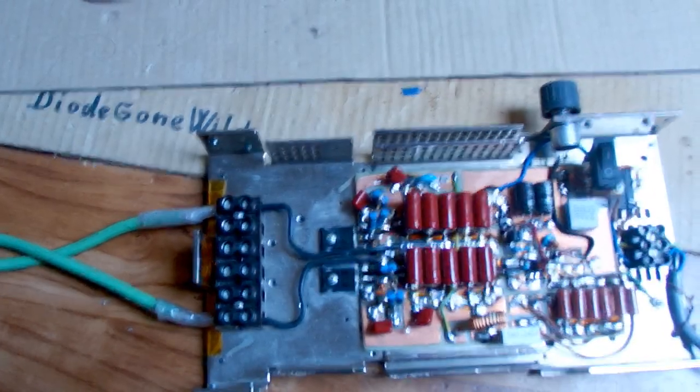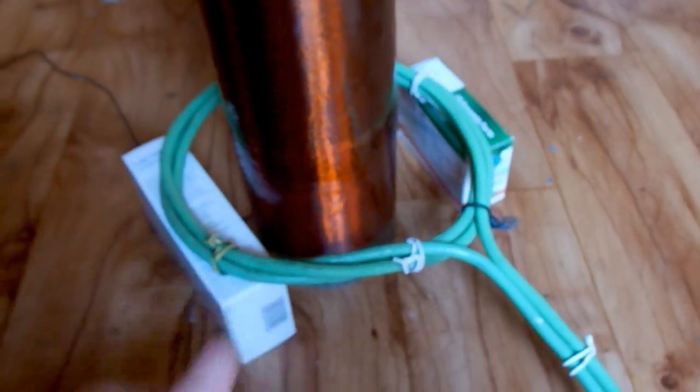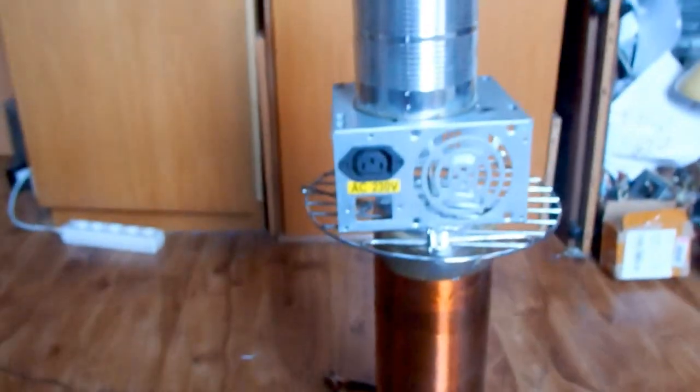So today let's make another episode of the solid state Tesla coil series and today let's try three turns on the primary to see if it makes longer arcs.